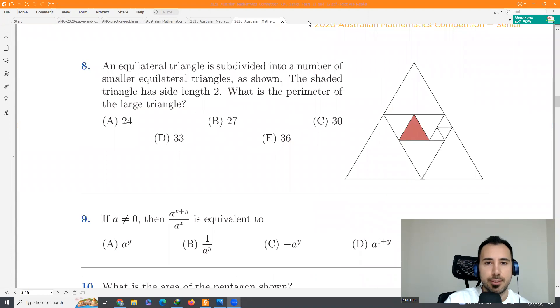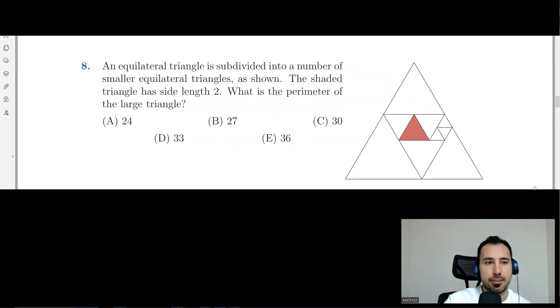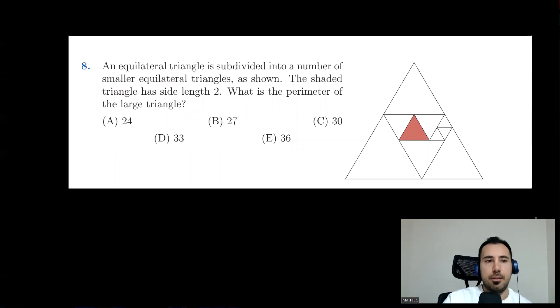Question eight. It's a little more challenging than the previous questions. We have an equilateral triangle. Equilateral means all these sides are the same. Subdivided means dividing it into smaller parts, into a number of smaller equilateral triangles. This one, the shaded one has side length 2. Not a very difficult question. If this is 2, well, this is also 2. This is also 2. See, they are the same size. So these are also 2. These are also 2. So this would be 2 and this would be 2.